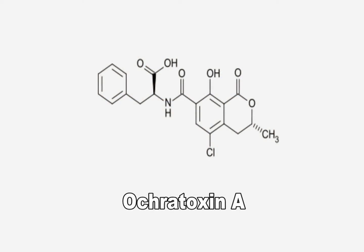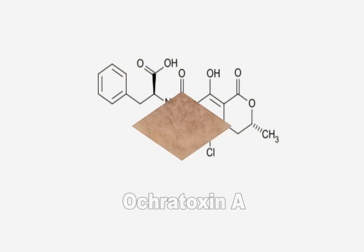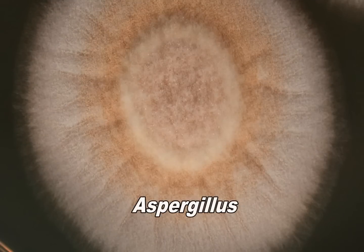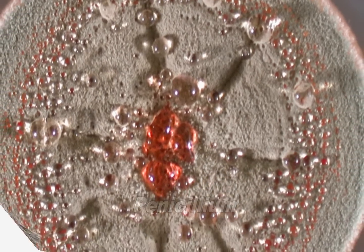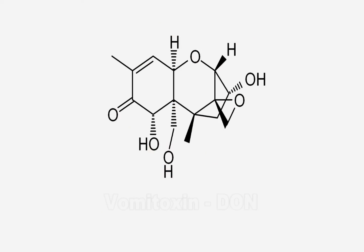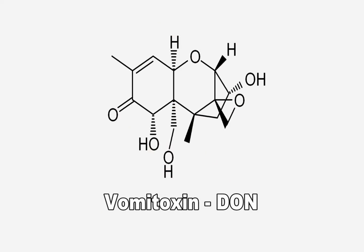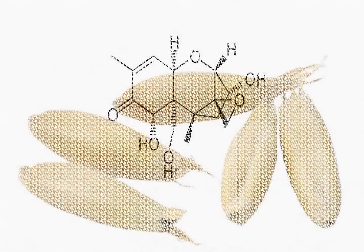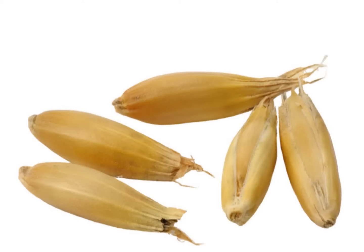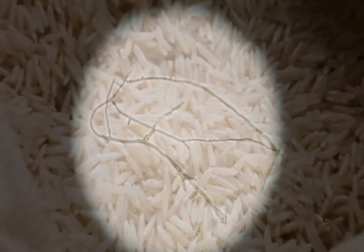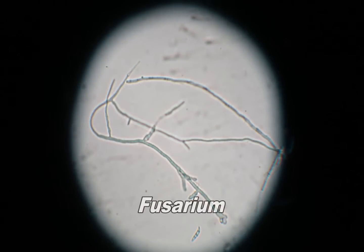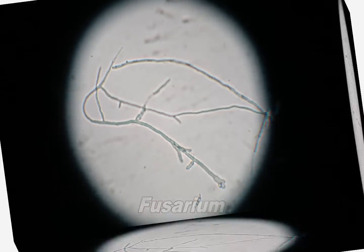Ochratoxin A is a mycotoxin produced by some species of Aspergillus and Penicillium. It is considered to be one of the most abundant food-contaminating mycotoxins. Vomitoxin, also known as DON, is a type B trichothecene. It is found predominantly in grains and also less frequently in rice and sorghum. DON is primarily associated with Fusarium fungi.